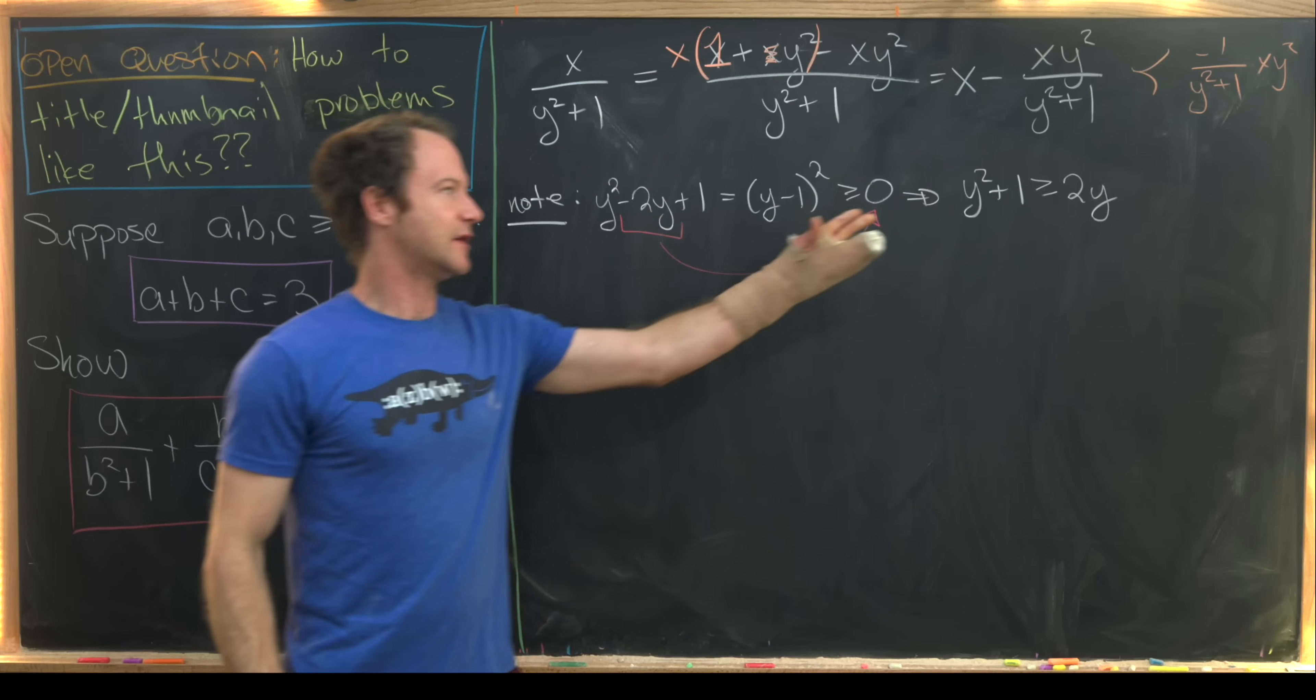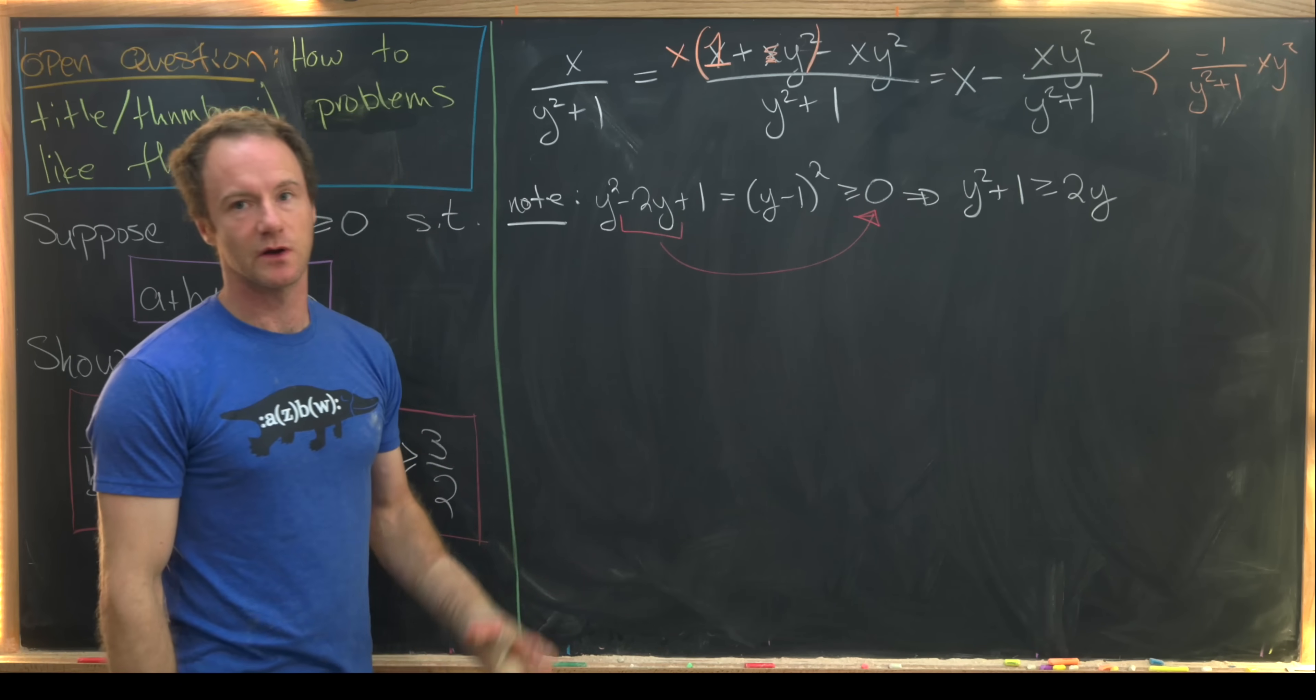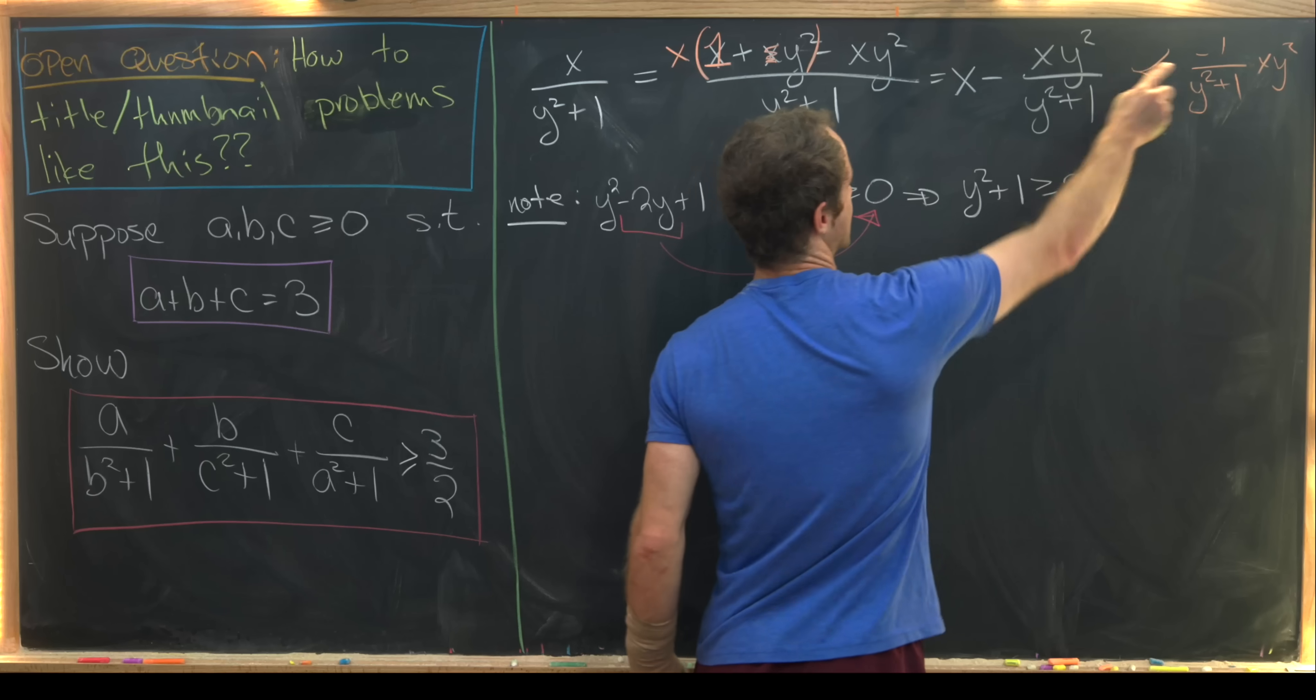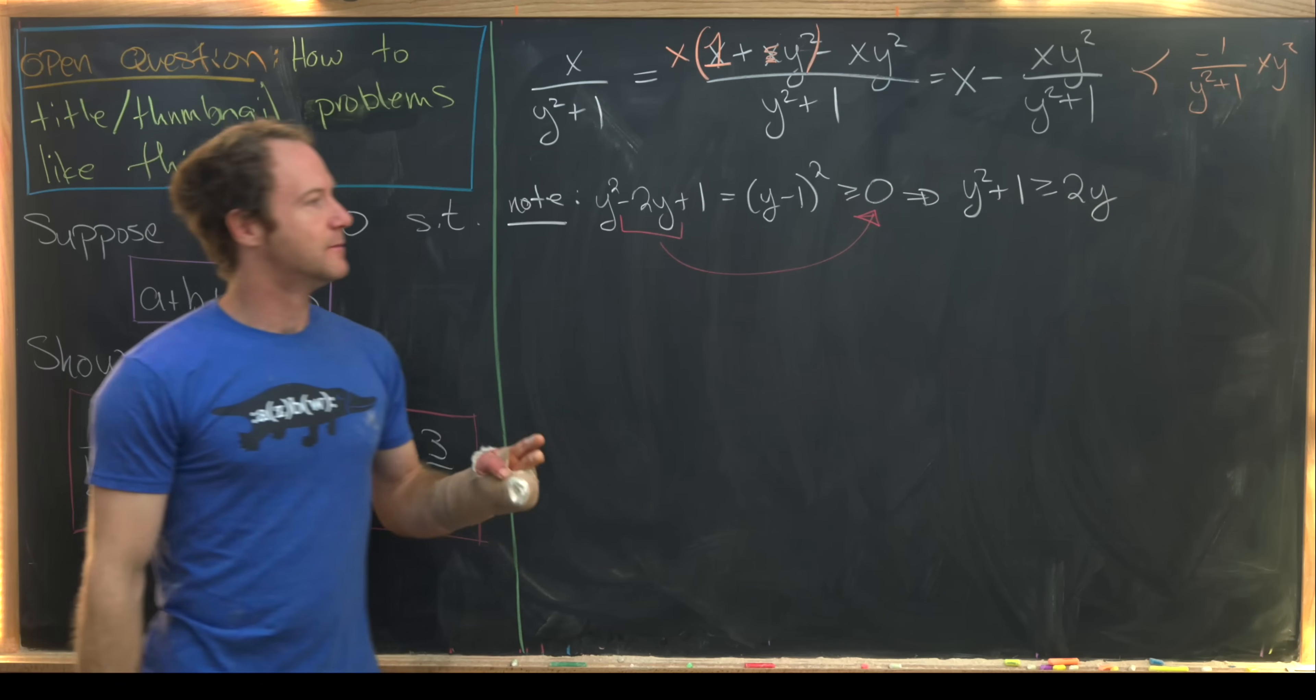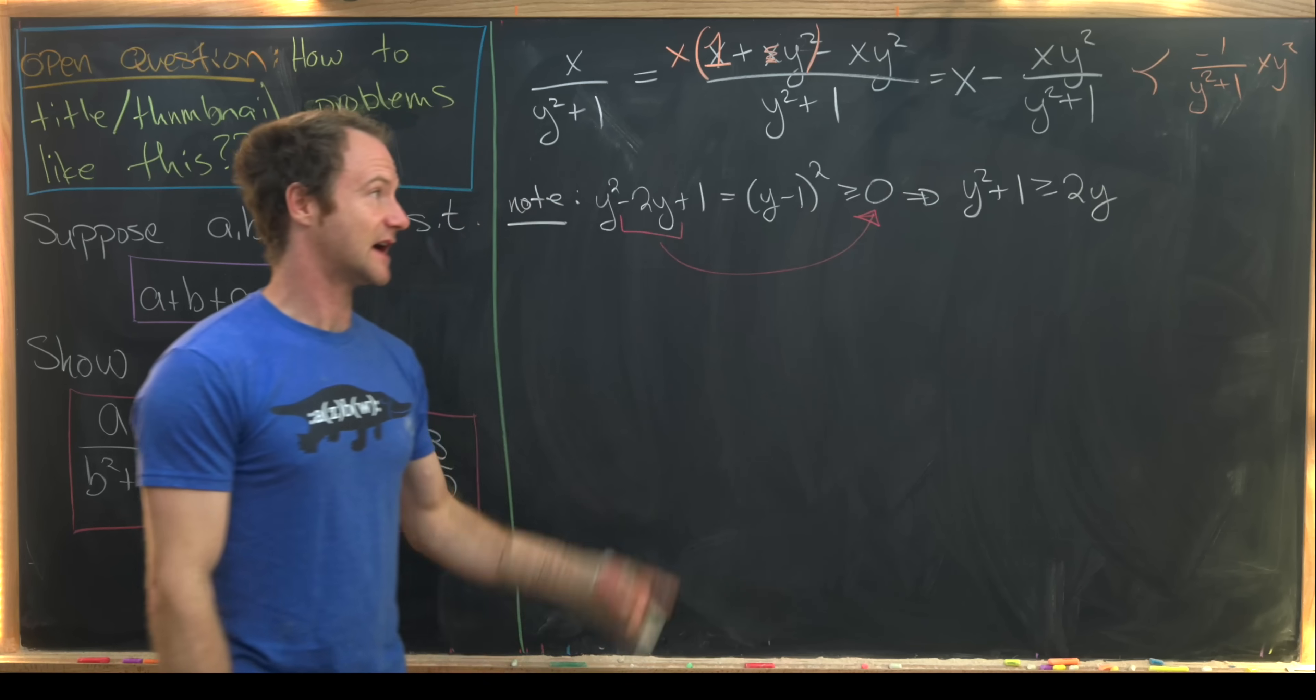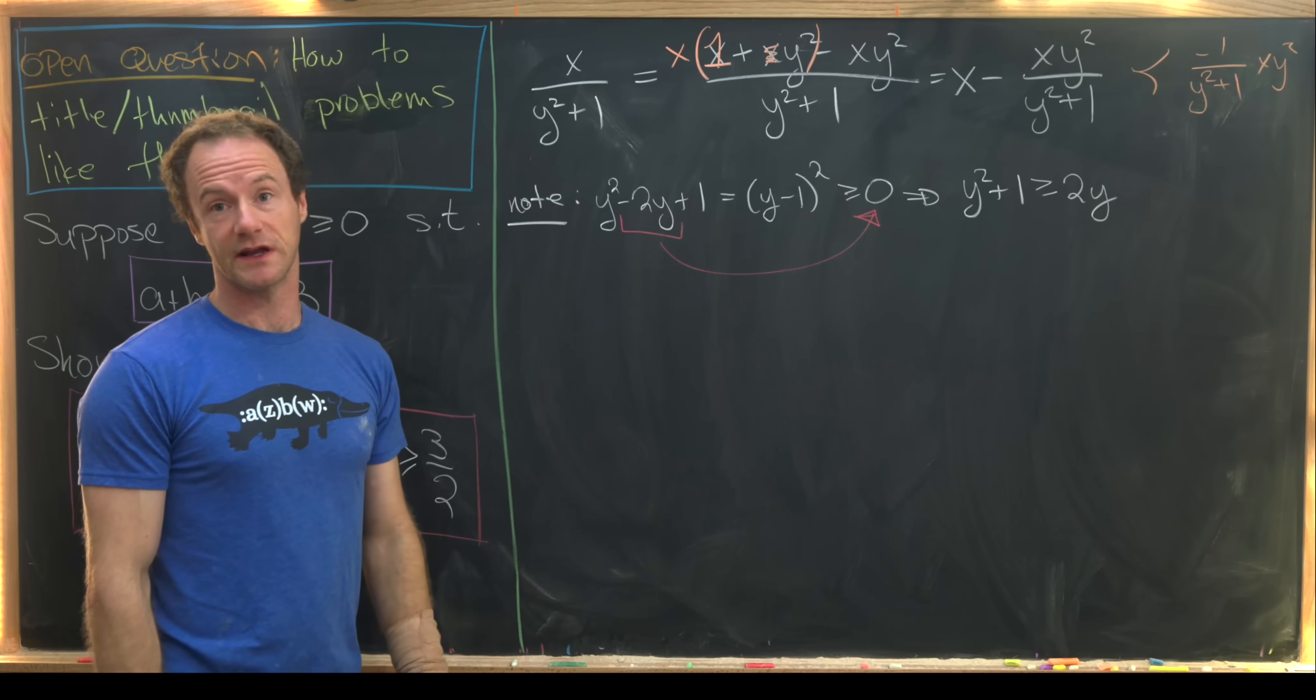So instead of an inequality involving y squared plus 1, we really need an inequality involving minus 1 over y squared plus 1. But it's easy to manipulate this guy to turn it into our goal inequality.